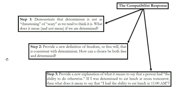Third — the biggest challenge to compatibilists — because they believe determinism is true, they will have to explain what the ability to do otherwise means. We've said the ability to do otherwise implies an open future, where there are multiple possibilities and you can choose among them. But if determinism is true, the future seems closed and it's not in our power to bring about another outcome. So how can compatibilists give an understanding of what we mean by the ability to do otherwise?